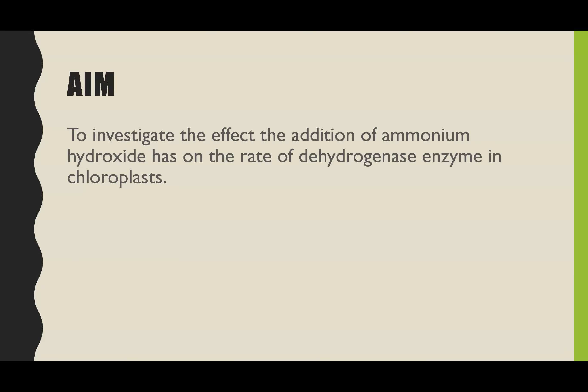The aim of this required practical is to find out what effect the addition of a variable has on the rate of dehydrogenase enzyme in chloroplasts. Dehydrogenase enzyme is not one of the enzymes on the specification that you need to know in regards to its role in photosynthesis. So this is adding in a new enzyme, but it links the idea of how enzymes function, which is part of your theory.